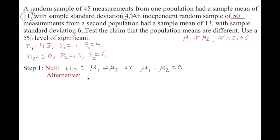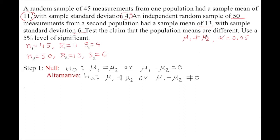The alternative hypothesis has three options, but since the claim is that means are different, this is a two-tail test. Hₐ: μ₁ ≠ μ₂, or μ₁ − μ₂ ≠ 0. The hint is given — they are different — so that's our null and alternative hypothesis.